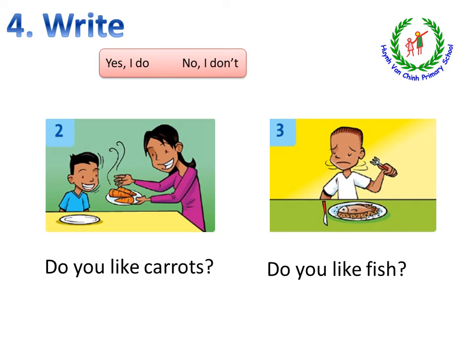Now, look at the screen. 'Yes, I do' or 'No, I don't.' Now, look at picture number 2. 'Do you like carrots?' — Bạn có thích carrots không? Ở đây, các em nhìn vào vẻ mặt của cậu bé. Cậu bé có vẻ vui vẻ, vậy chắc chắn cậu bé sẽ thích ăn carrots. Vậy nên, câu trả lời sẽ là: 'Yes, I do.' — Vâng, con thích.